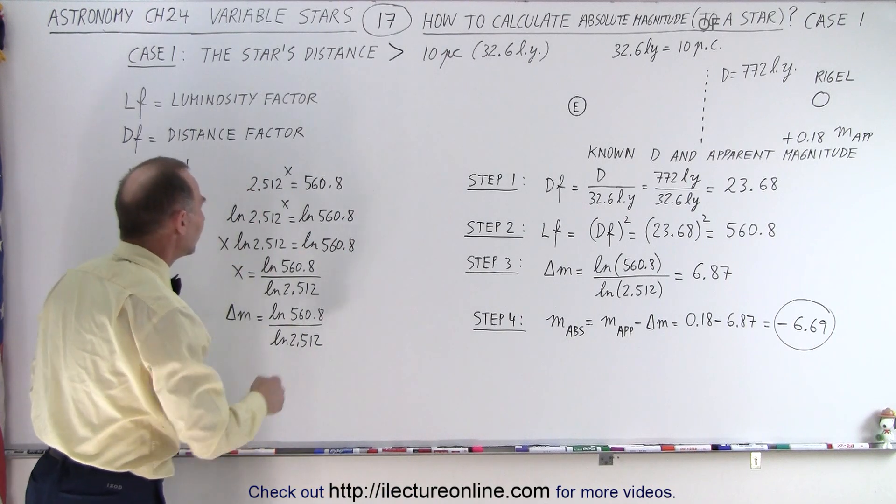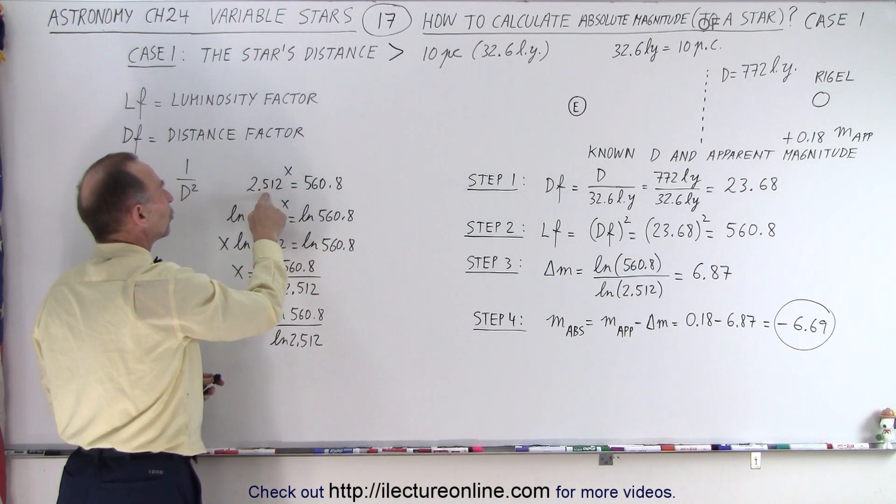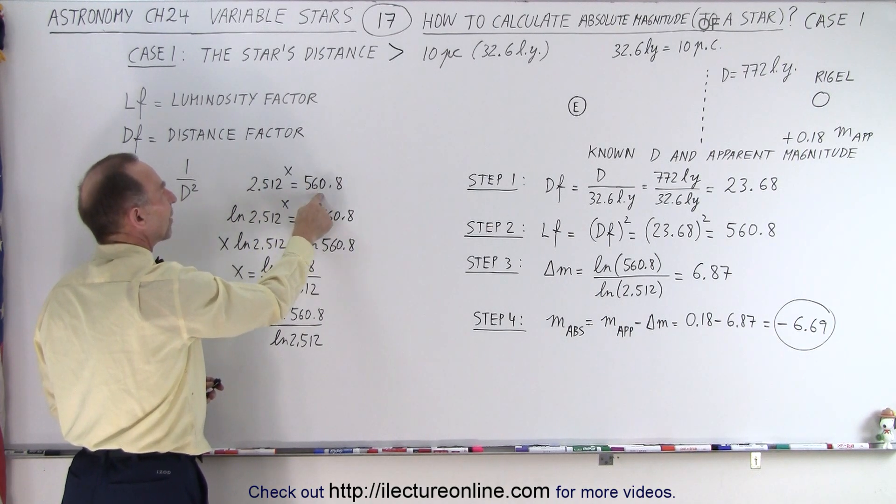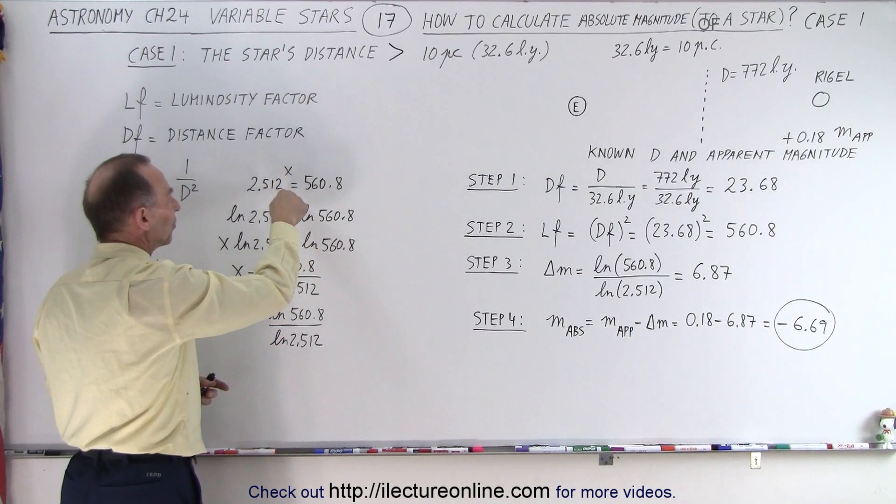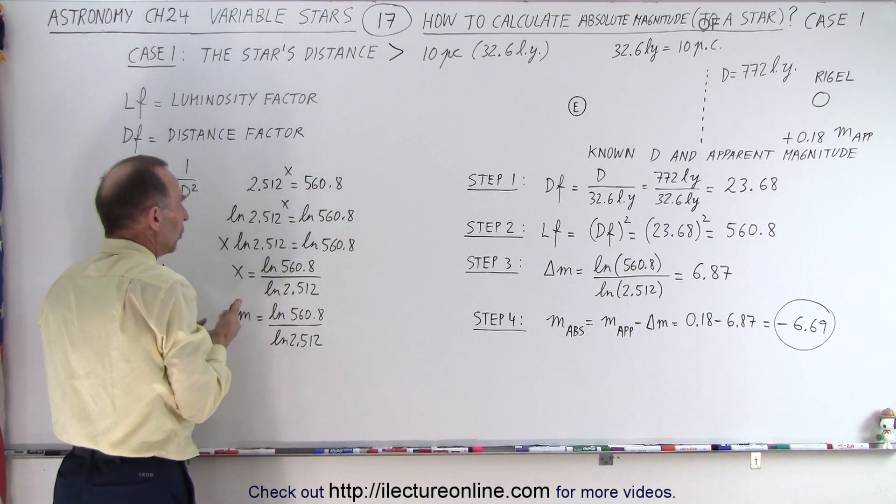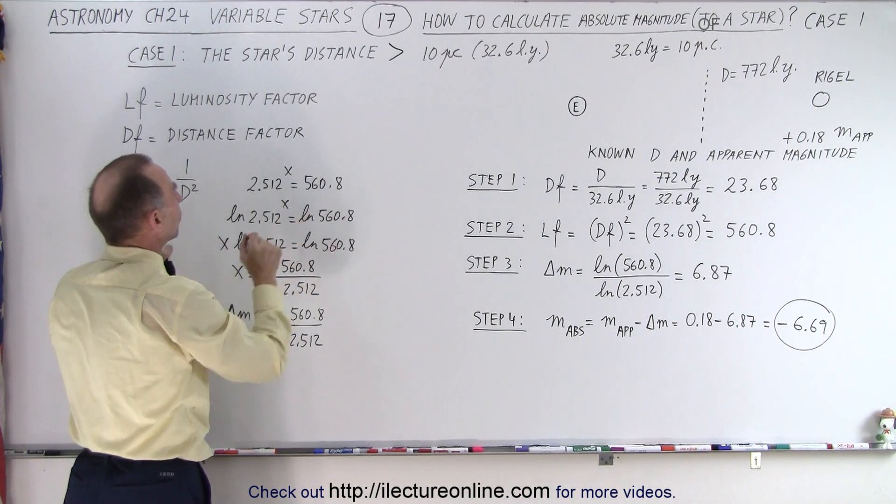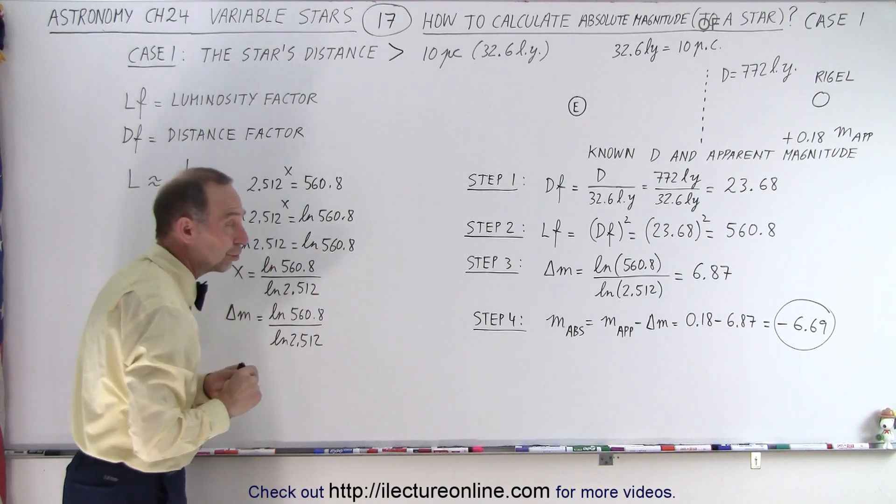Well, if you're interested, this is how we use it. So, we know that the number 2.512 raised to the delta M is going to be equal to 560.8. So, we want to solve this equation for x, in this case, x or delta M, whichever we want to use. And so, we first take the natural log of both sides, then we put the x in the front, then we divide both sides by the natural log of 2.512.